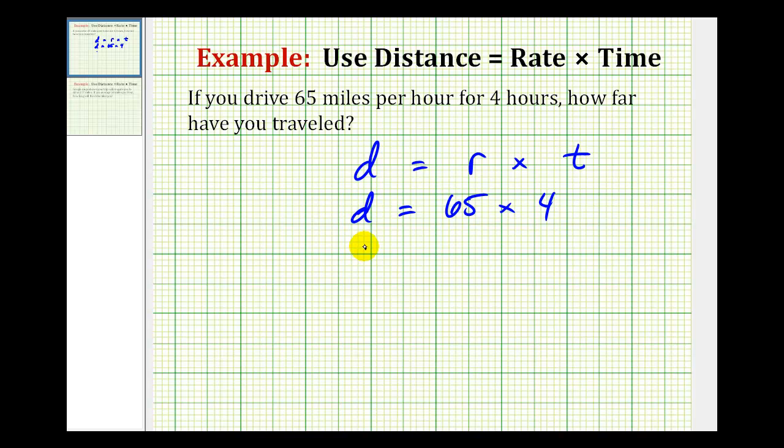This product will give us the total distance traveled. So let's go ahead and find this product. We'll have 65 times four. That'll be 20, carry the two. That's 24 plus two. So we have 260 miles.